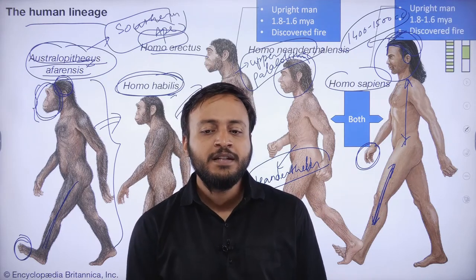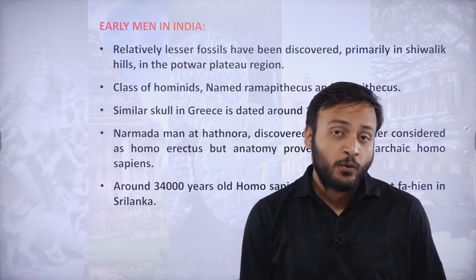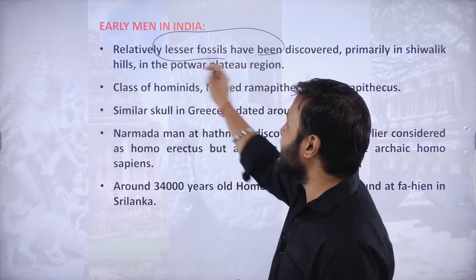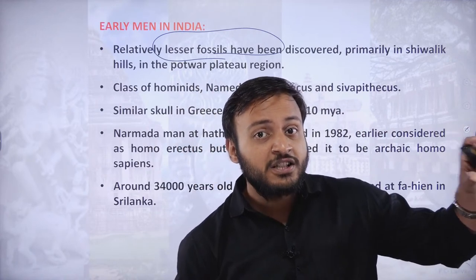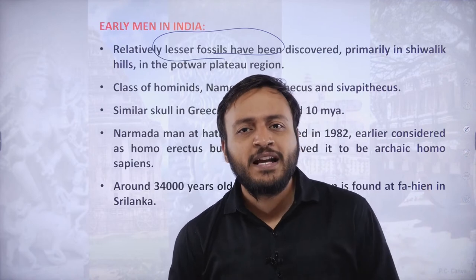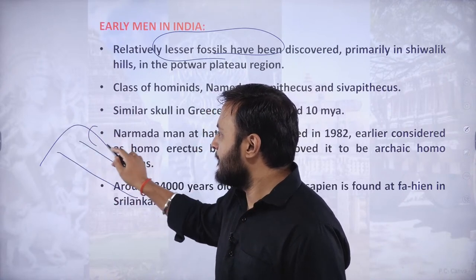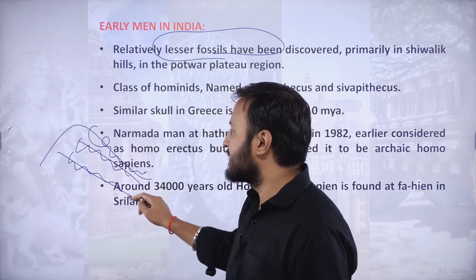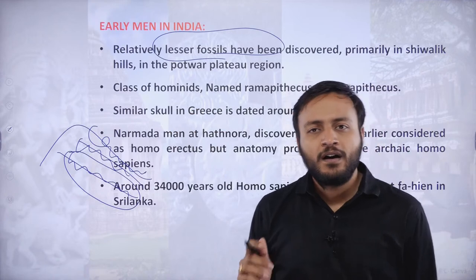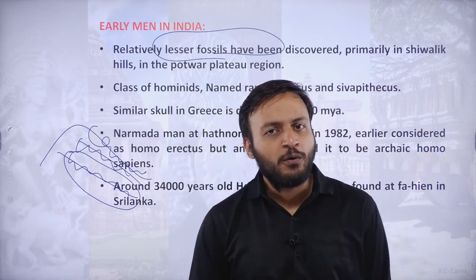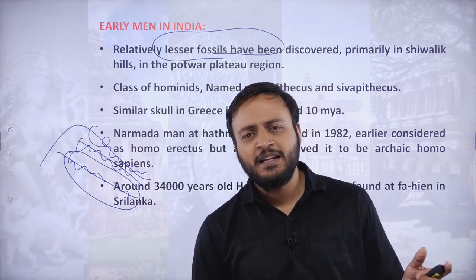Homo sapiens sapiens had an upright posture with complete division of digits, elongated femur, and elongated legs. Regarding the discovery of early men in India — there are very few fossils present in the Indian subcontinent. Whichever fossils are found, they are located in the Shivalik area — the lesser or outer Himalayas. The outermost Himalayan ranges are called the Shivaliks, and this is where early men species and their fossils have been found in India.